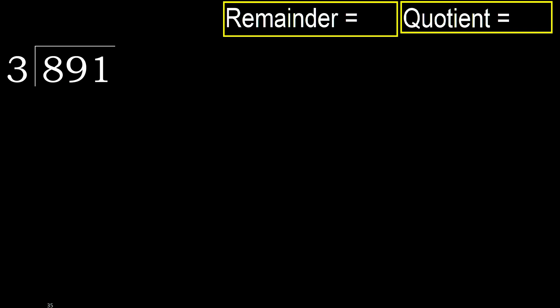891 divided by 3. 8 is not less, therefore with 8: 3 multiplied by which number is nearest to 8 but not greater? 3 multiplied by 3 is 9, which is greater. Multiplied by 2: 6 is not greater. Subtract: 8 minus 6 equals 2.